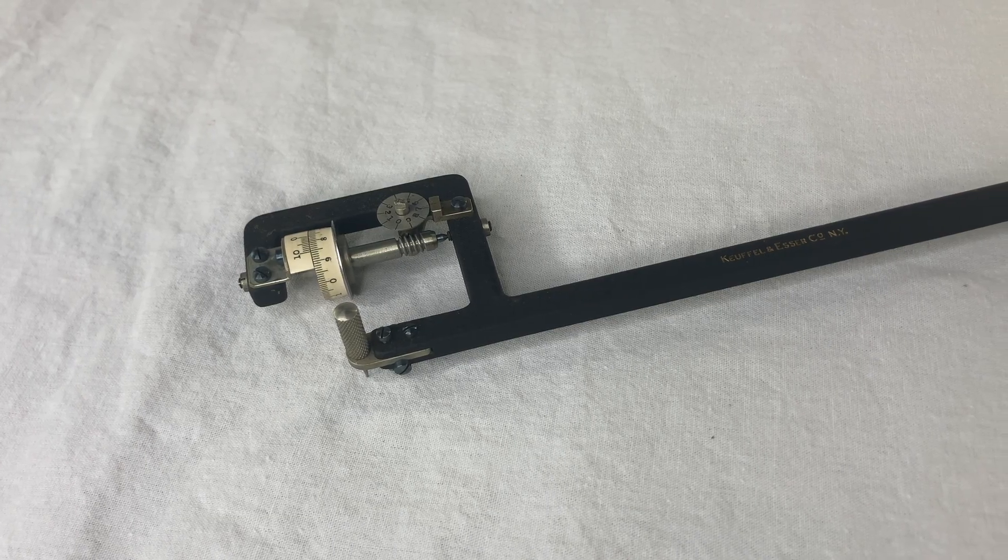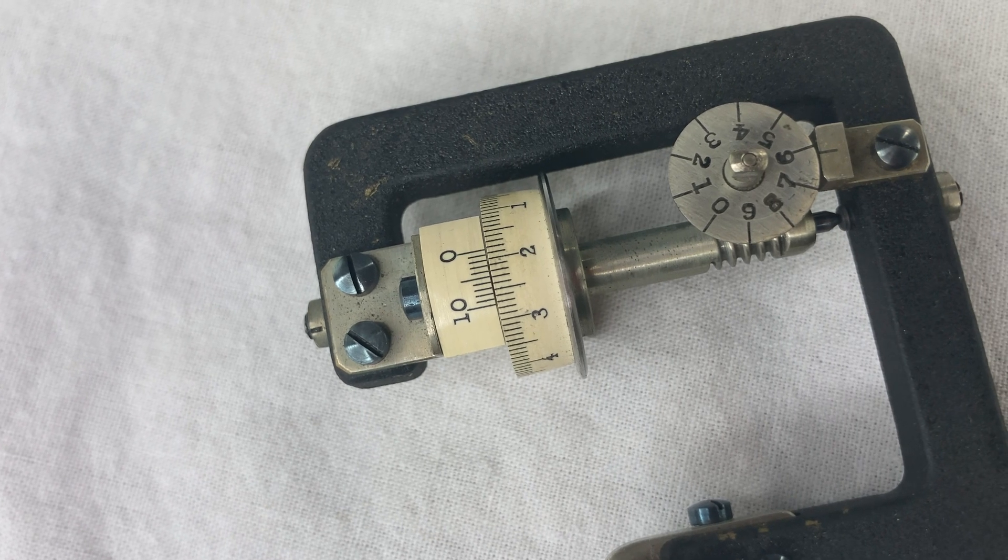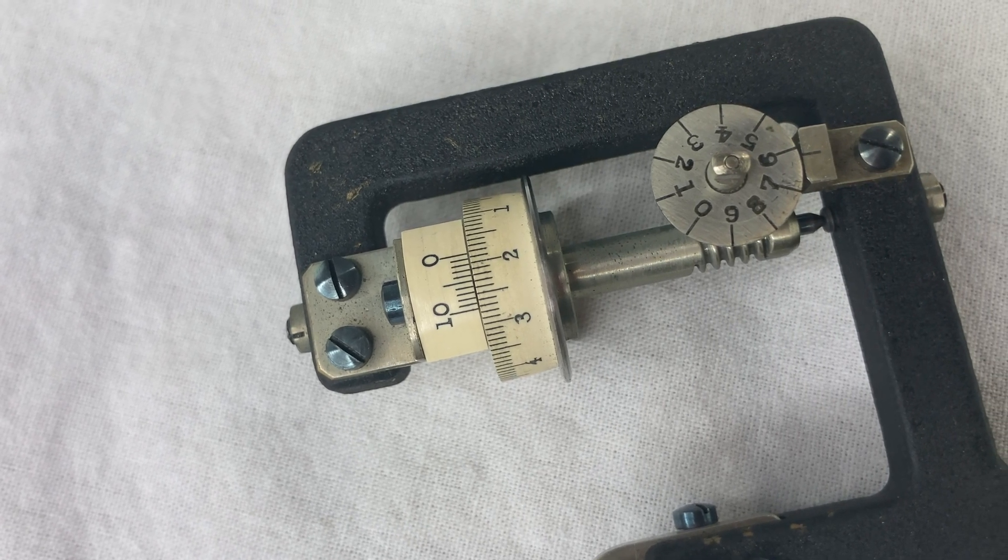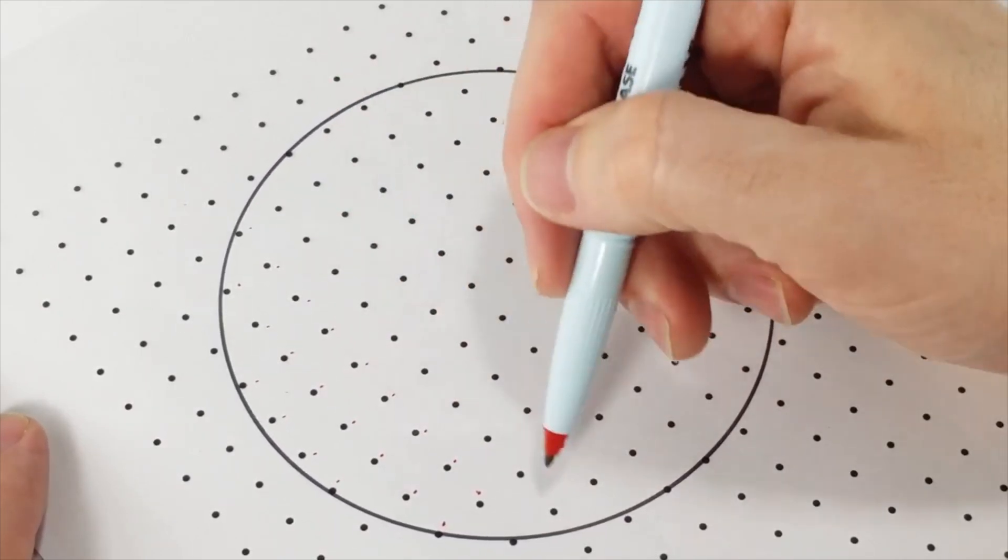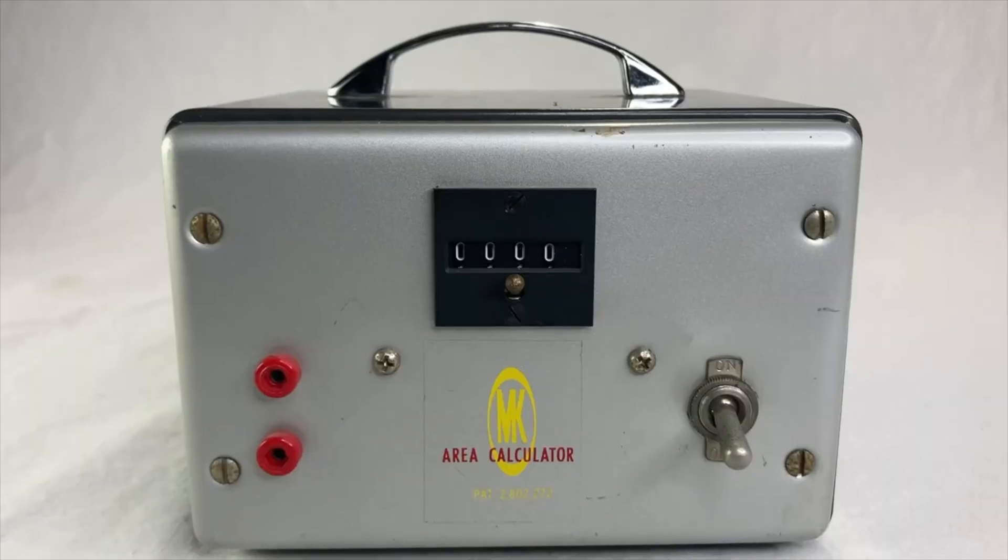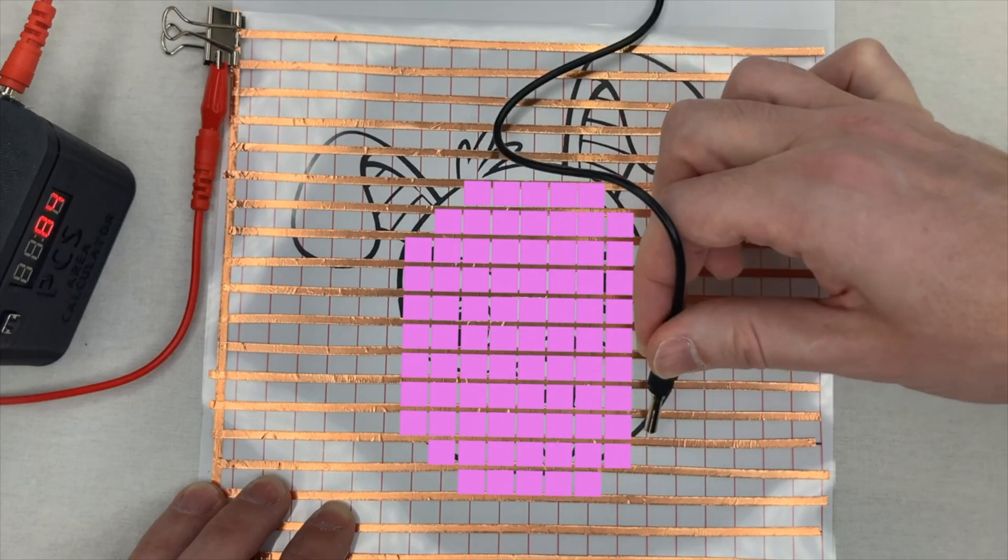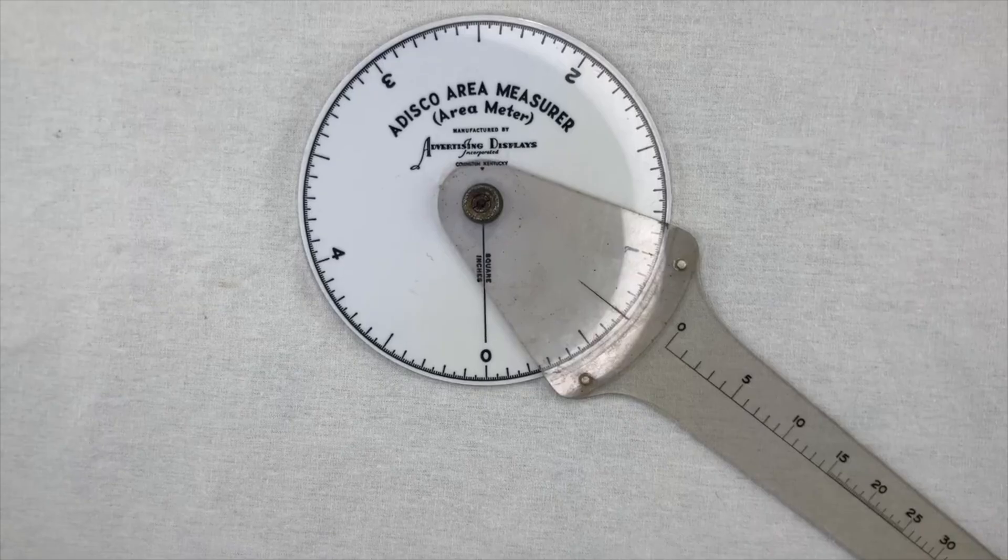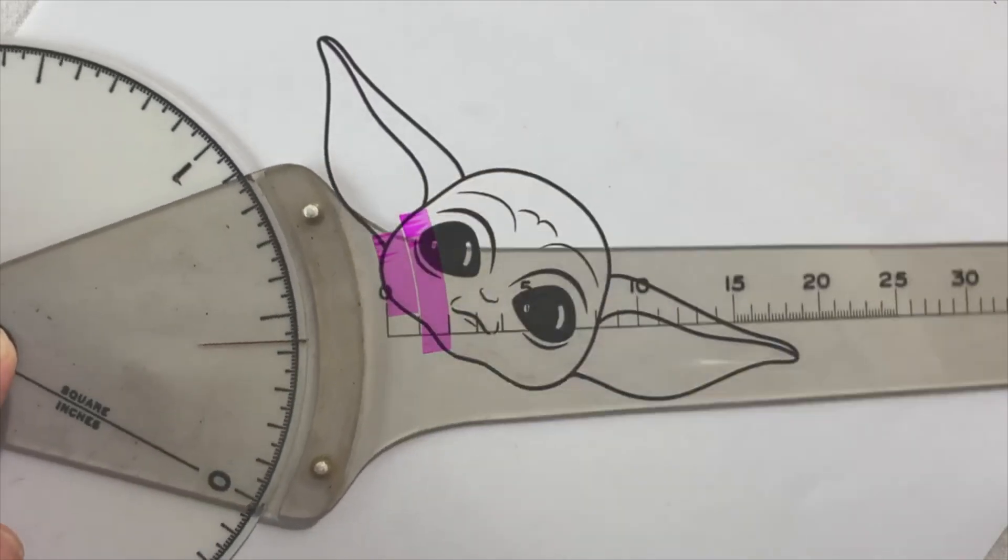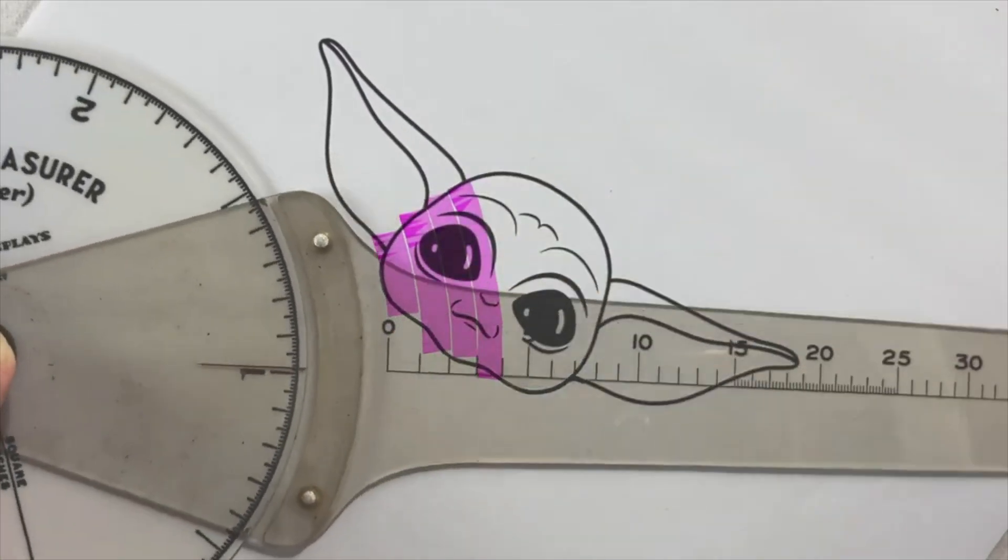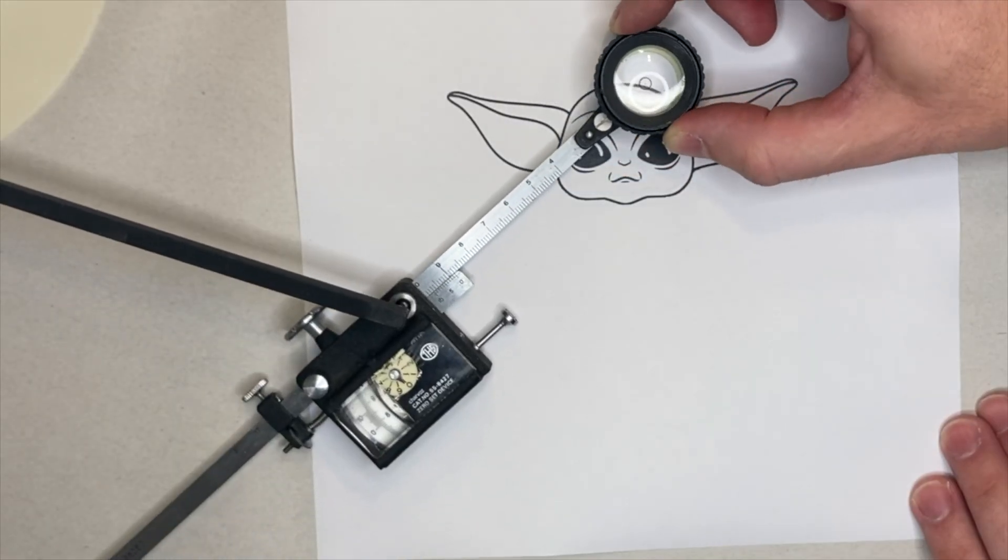Long time fans will know that I'm into planimeters. These are physical instruments meant to measure the area of a shape on paper. I've done videos about the dot planimeter which is a very simple way of measuring area by counting dots. Then there was the MK area calculator which is a similar idea but does the counting electronically. We got the ADISCO area measure which is a pretty unique ratcheting design but also a similar idea. All of these are pretty easy to understand if you visualize it properly.